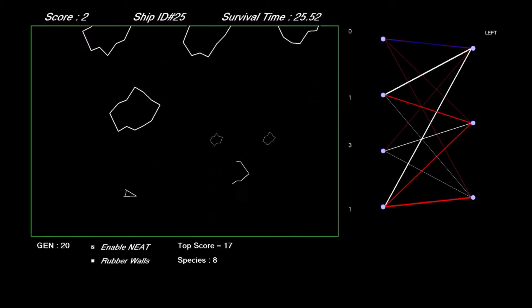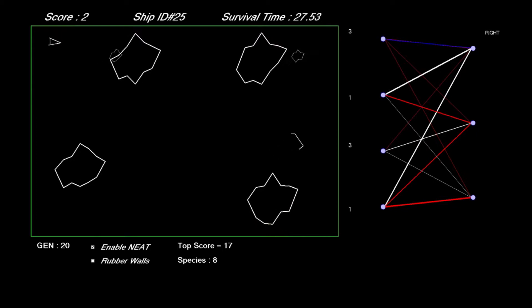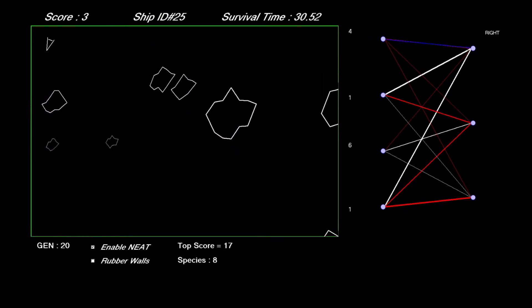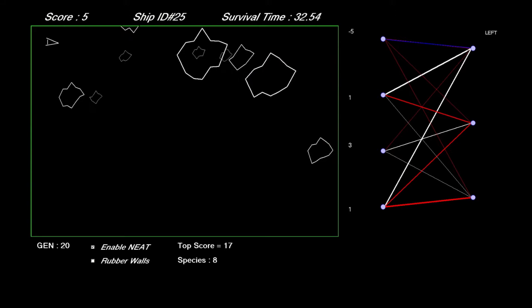In the network shown, red connections have negative weights, white have positive weights, blue ones are recurrent, and the thickness of the lines is proportional to the size of the weights.